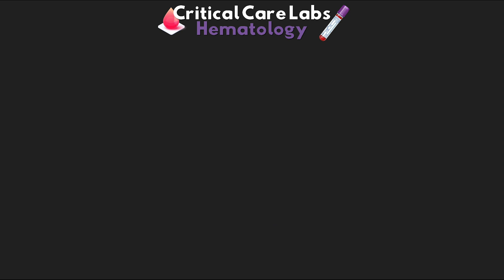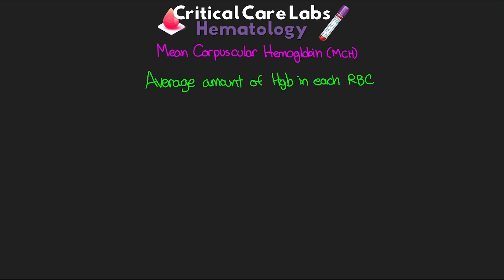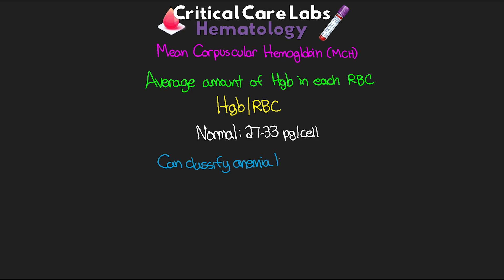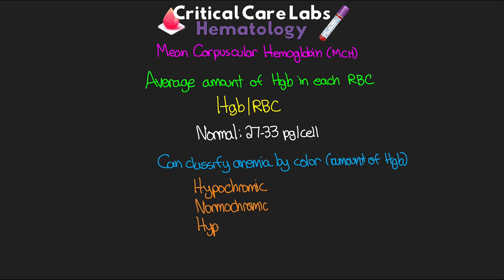The last index we're going to talk about is the mean corpuscular hemoglobin, or MCH, which has a close relationship to the mean corpuscular hemoglobin concentration, the MCHC. The MCH measures the average amount of hemoglobin in each red blood cell. This value is derived by dividing the hemoglobin by the red blood cell count. Normal is 27 to 33 picograms per cell. With this information, we can classify anemia based on color — hypochromic, normochromic, or hyperchromic.